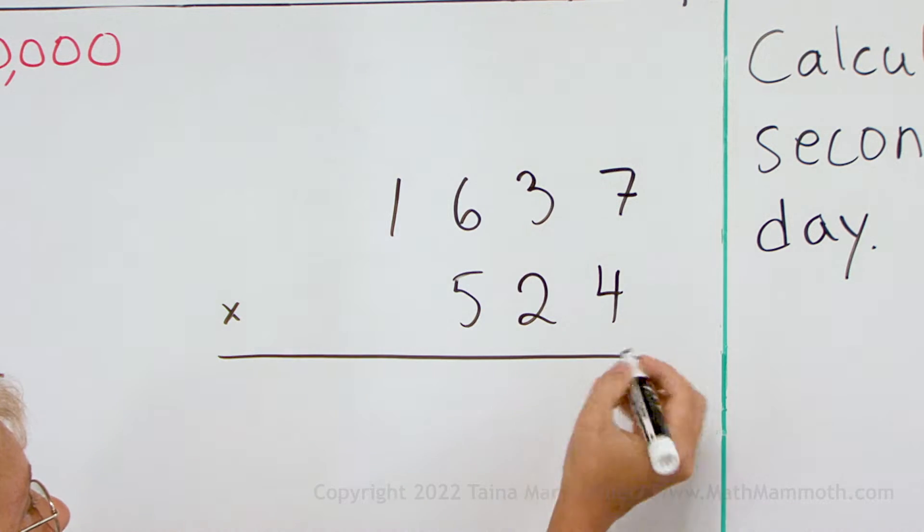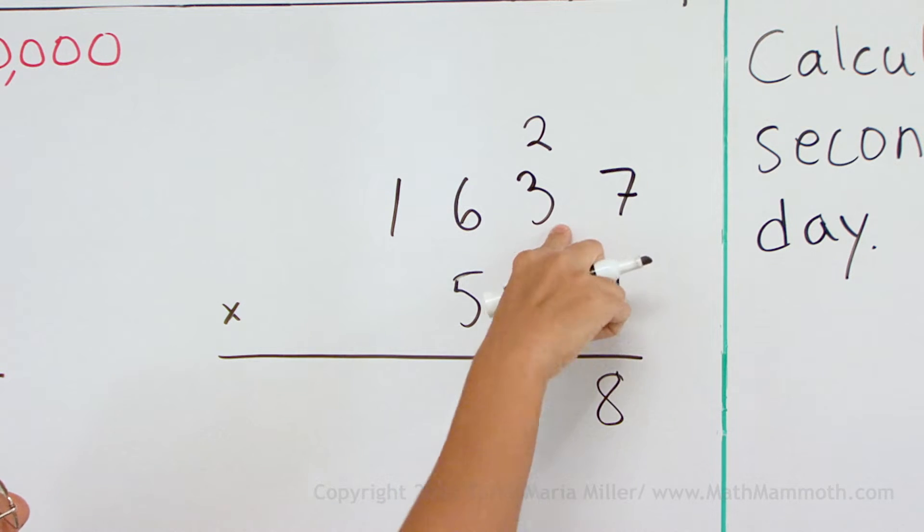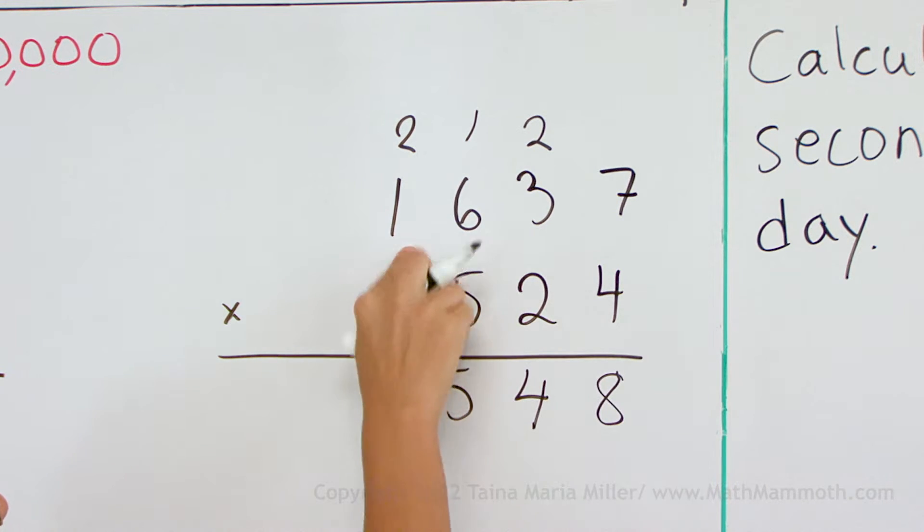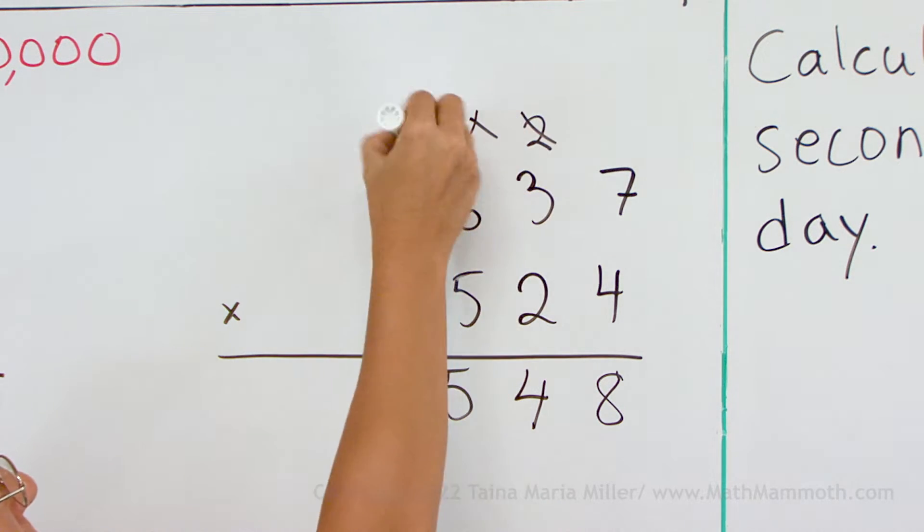Four times seven, that would be 28. Four times three, 12 plus two, 14. And here we have 24 plus one is 25. And lastly, four times one plus two is six. Okay, let's cross those out.